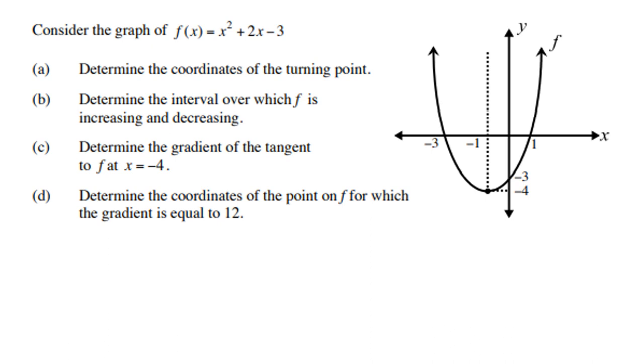Let's look at the example: f(x) = x² + 2x - 3. You'll see the sketch of this parabola with a minimum turning point. Determine the coordinates of the turning point. Determine the interval over which f is increasing and decreasing. Determine the gradient of the tangent to f at x = -4, and determine the coordinates of the point on f for which the gradient equals 12.